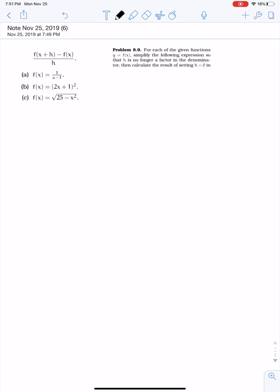Okay, this is problem 8.9. It says for each of the given functions y equals f of x, simplify the following expression so that h is no longer a factor in the denominator, then calculate the result of setting h equals 0. So I want to make sure that h isn't a factor in the denominator.